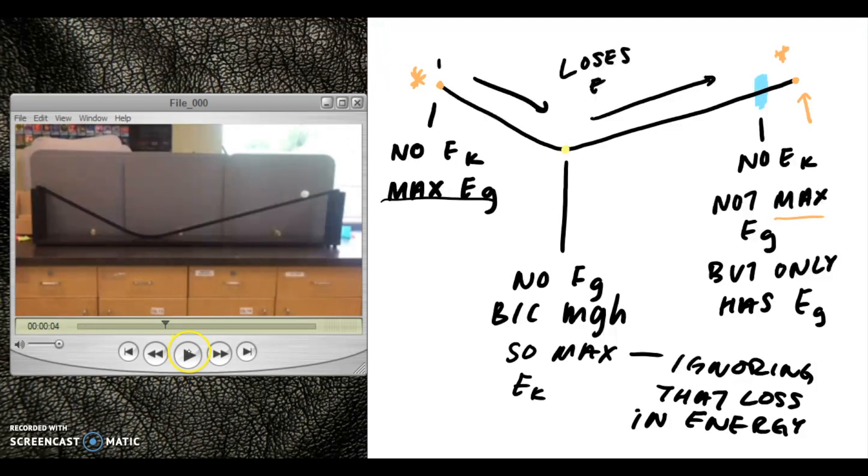Once it reaches to the bottom of the ramp here, at this yellow point, it has no gravitational potential energy because it has no height, essentially. So it has max kinetic energy if you ignore the loss in energy through sound and air resistance.